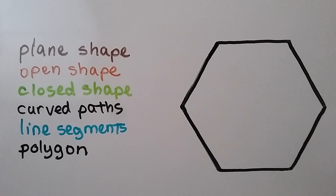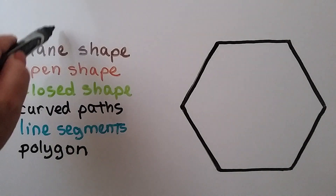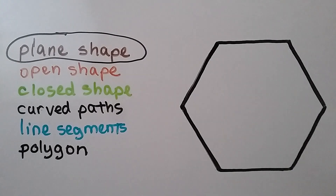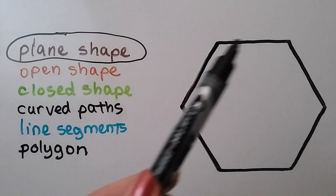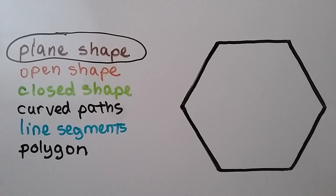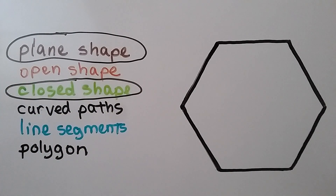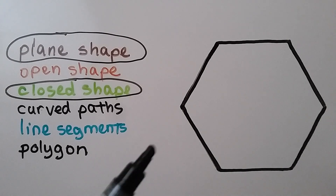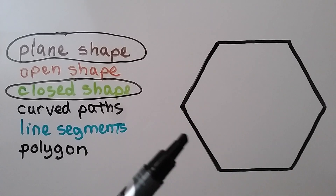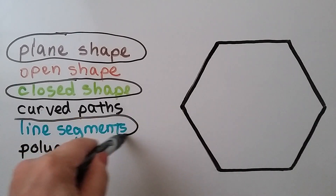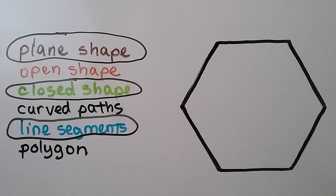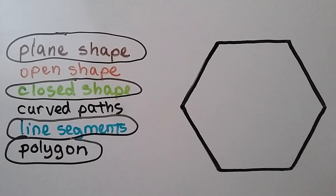What about this shape? Is it a plane shape? Yes, it's a two-dimensional plane shape. Is it an open shape? No openings — so it's not open. Is it a closed shape? Yes. Are there any curved paths? No curves. Do you see line segments? Yes — here, here, here, here, here, and here, making up the sides. Is it a polygon? It's a closed shape with line segments, so yes — it's a polygon. In fact, that's a hexagon.